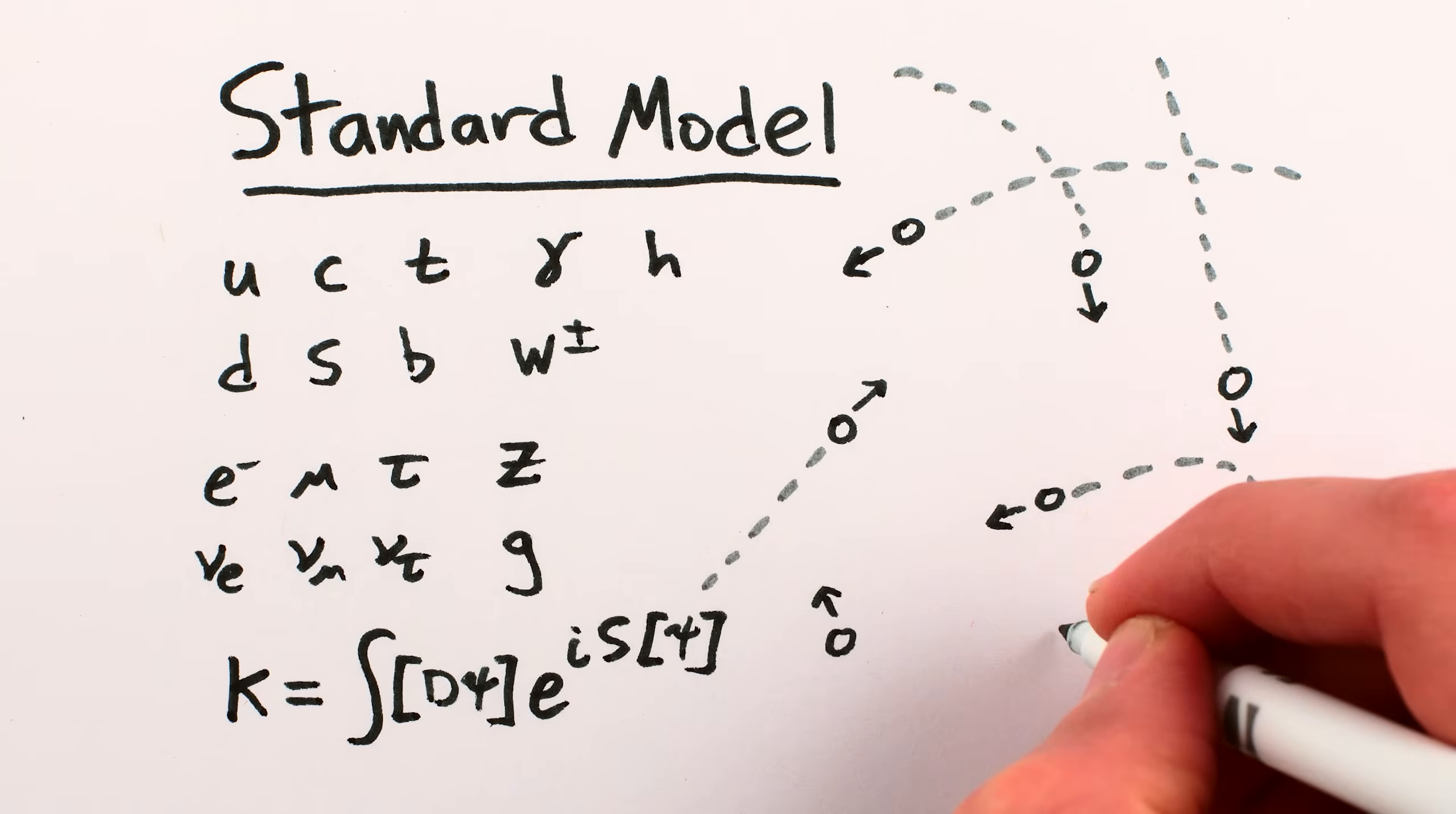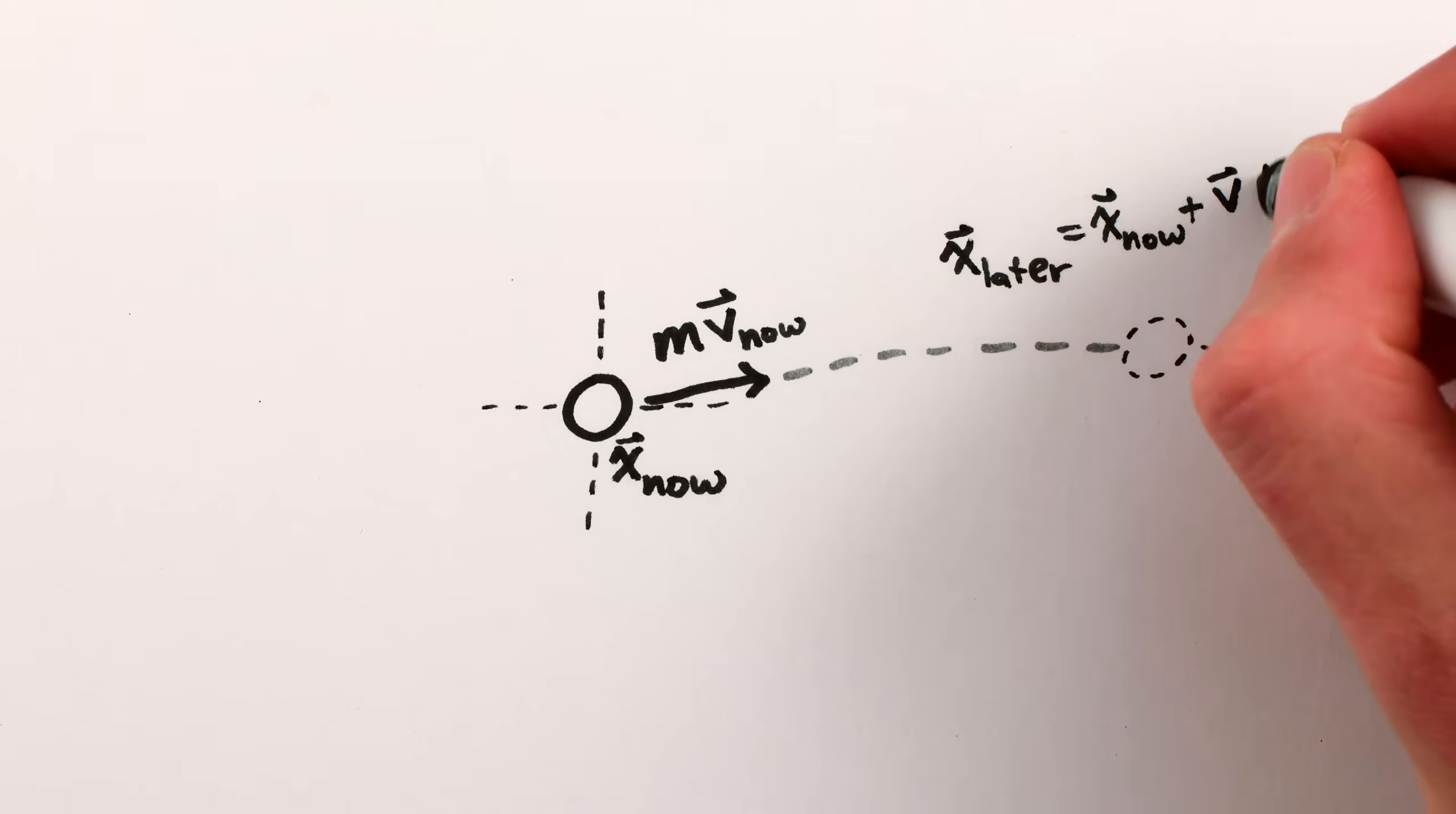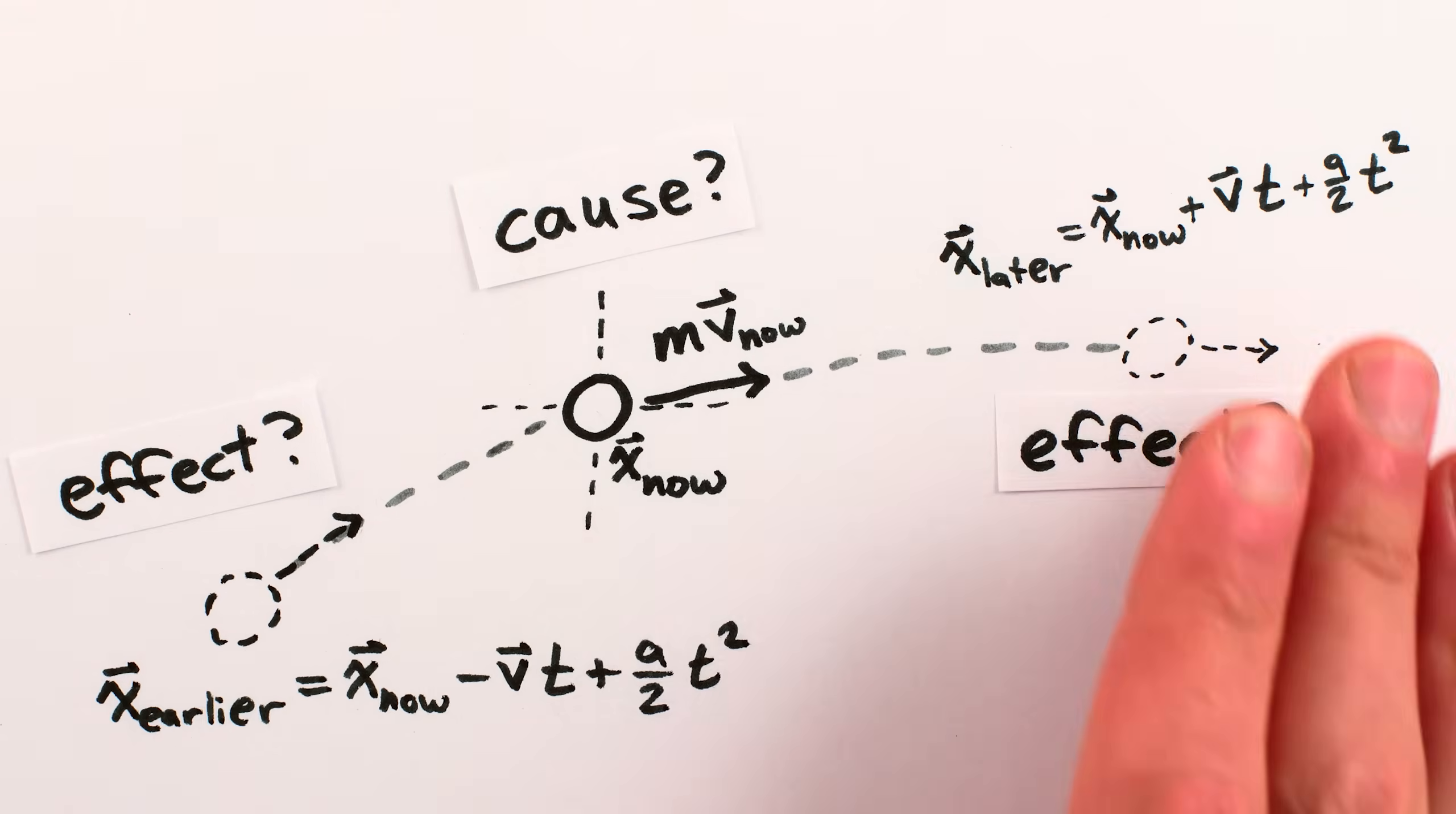In principle, you can just as easily know their past paths as their future ones. The current momentum and position of a particle determine its movement forward into the next second, but they also determine how it was moving in the previous second. Neither is really a cause preceding an effect.